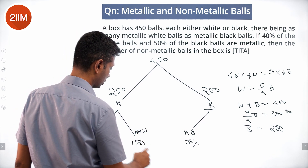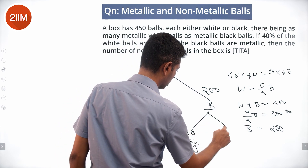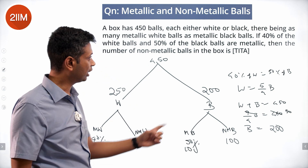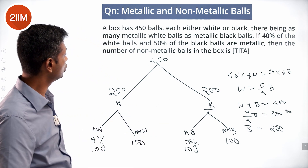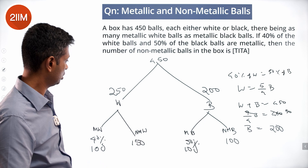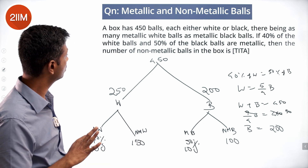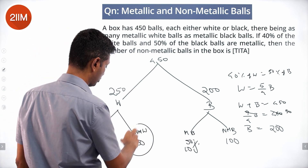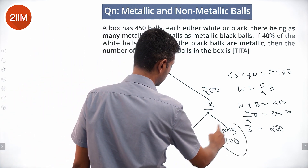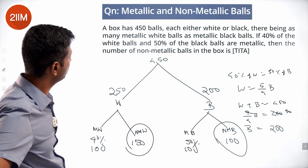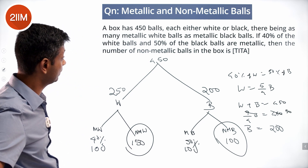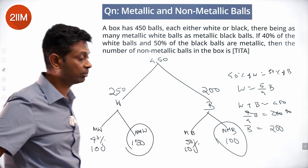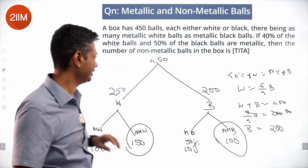Non-metallic white would be 150, non-metallic black would be 100. So the total number of non-metallic balls in the box is 150 plus 100, which equals 250 totally. Nice simple question.